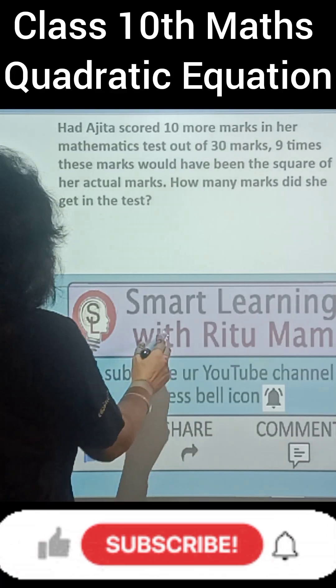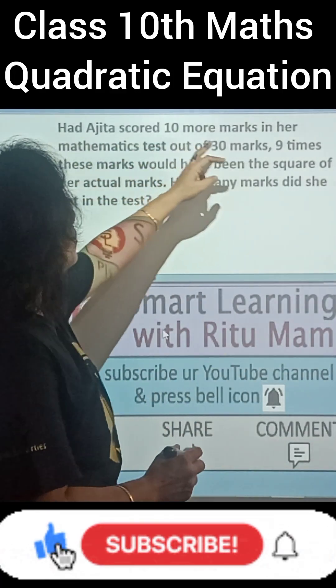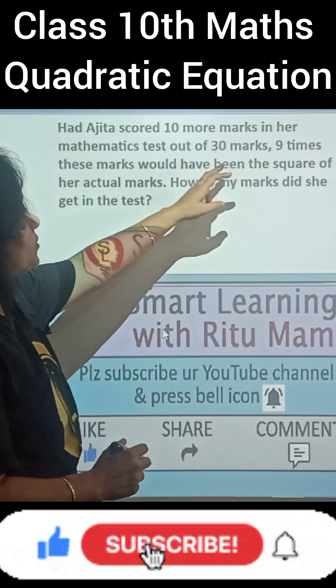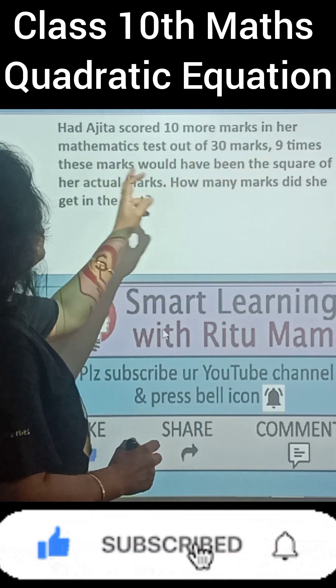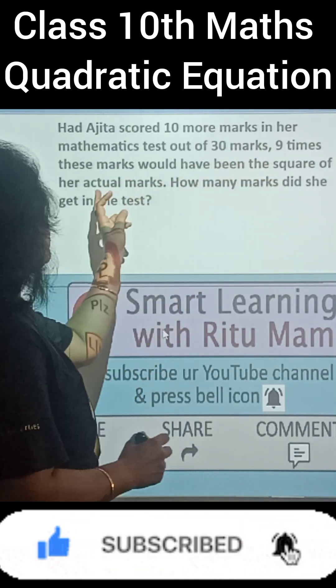Hello buddies, today we will solve this question. Had Ajita scored 10 more marks in her mathematics test out of 30 marks, then 9 times of these marks is square of her actual marks.